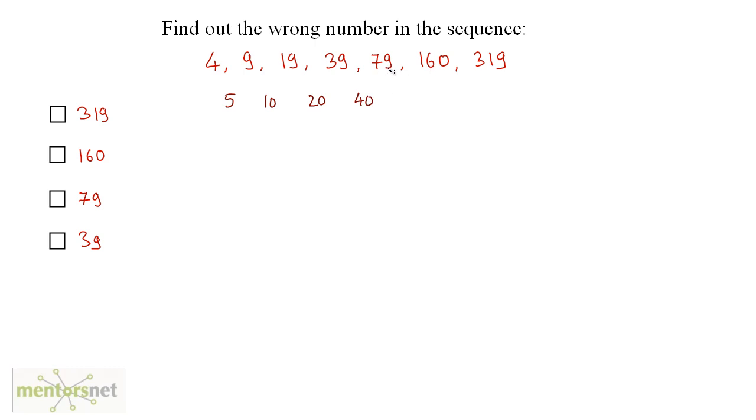And 160 minus 79 is 81. And 319 minus 160 is 159. So we are getting kind of a pattern here. 5 gets doubled to 10. 10 again gets doubled to 20. This again gets doubled to 40. But here, we have a problem. 40 is double is 80. But here, we have 81. So this is kind of breaking the chain.